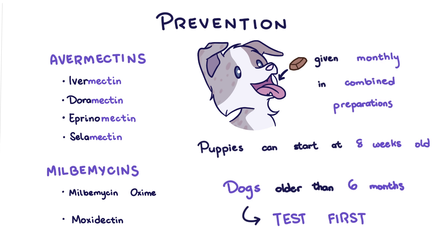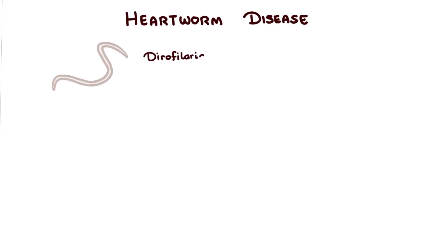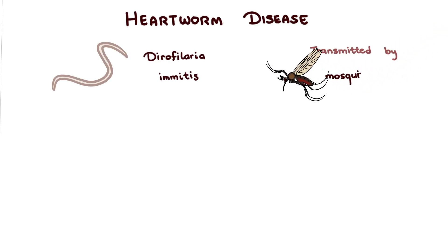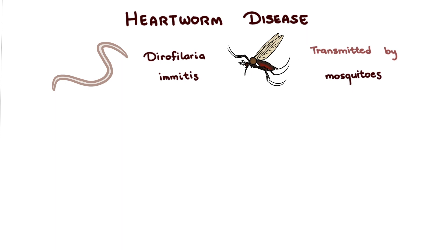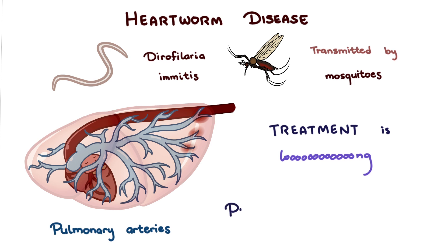To summarize: heartworm disease is caused by Dirofilaria immitis, which is transmitted by mosquitoes. The term 'heartworm' is a slight misnomer because the parasite prefers to cause havoc in the pulmonary arteries. Pathology is related to the irritation, inflammation, and sometimes obstruction of these arteries and surrounding tissue. Treatment is long and requires strict cage rest to minimize complications. Prevention is way better.